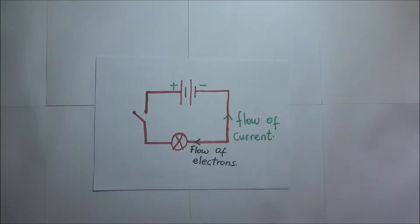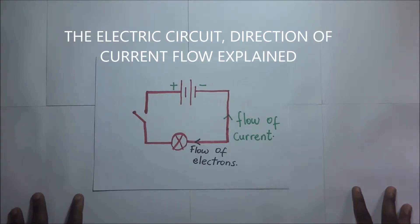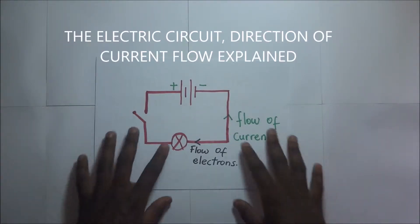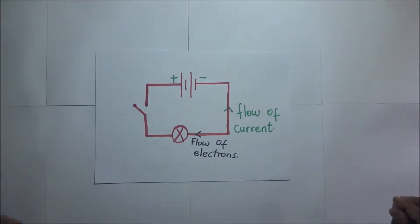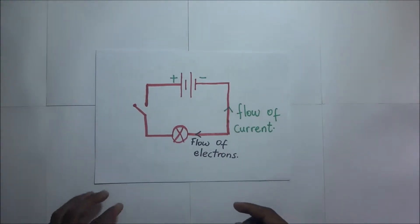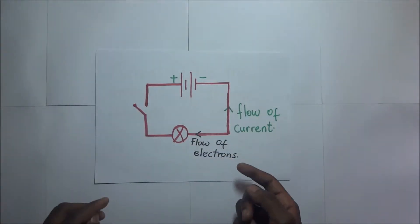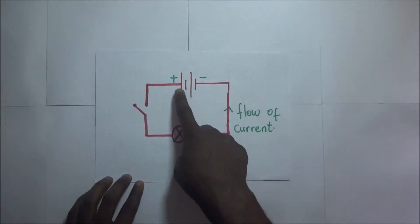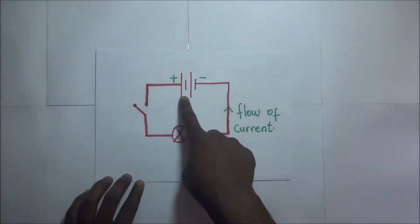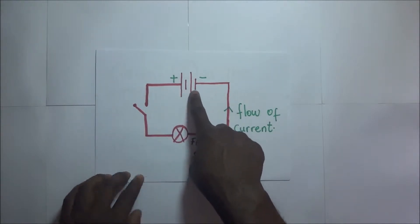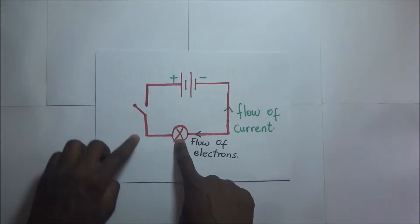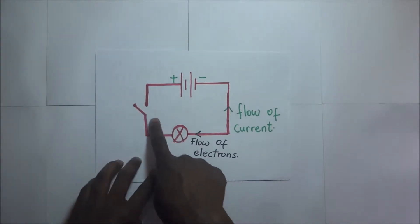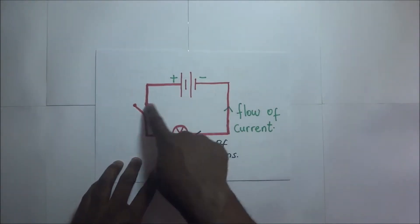We are going to look at an electric circuit. By definition, an electric circuit is simply a path in which electrons flow. In our diagram here, we have an electric circuit diagram. This symbol stands for a battery — this battery has two cells — this is a bulb or light source, and this is a switch.